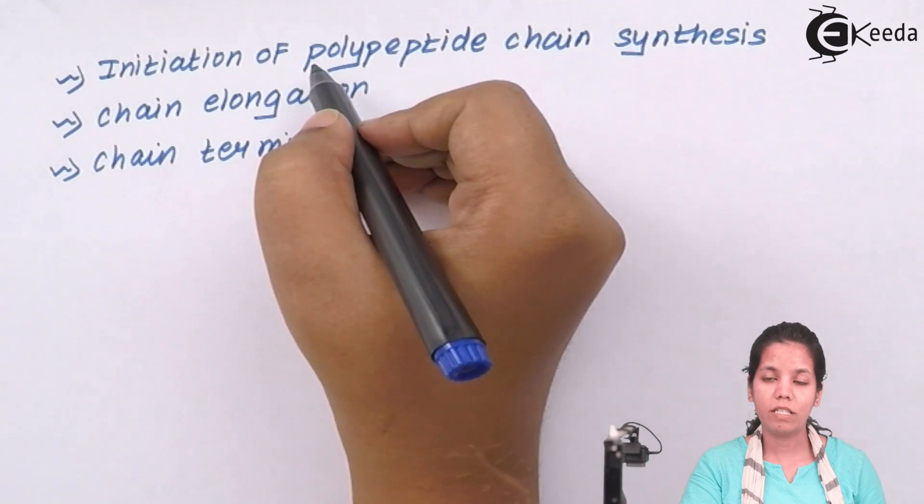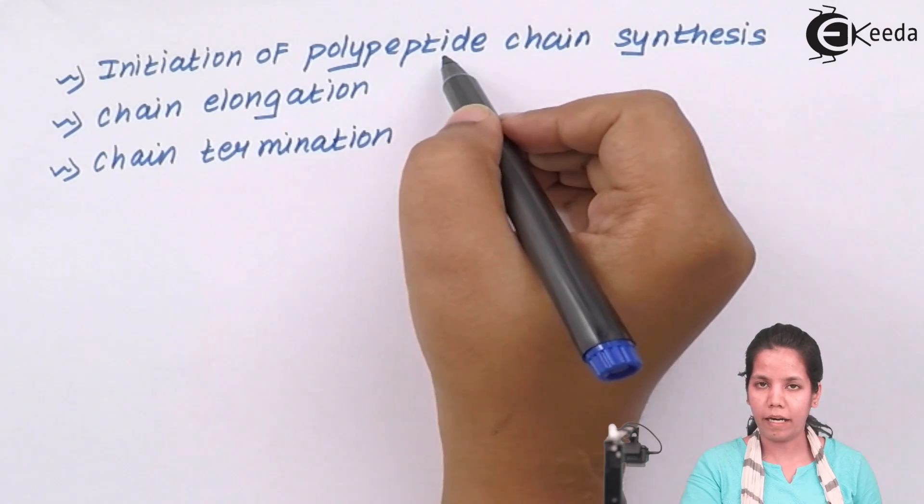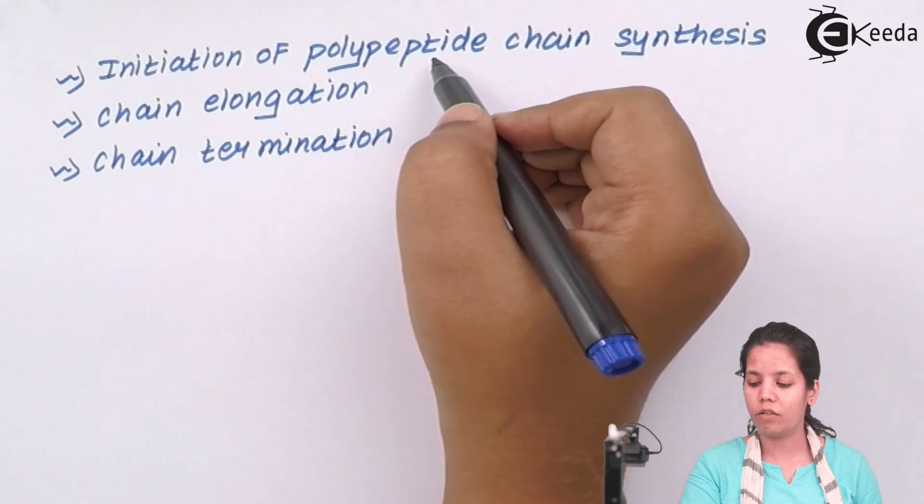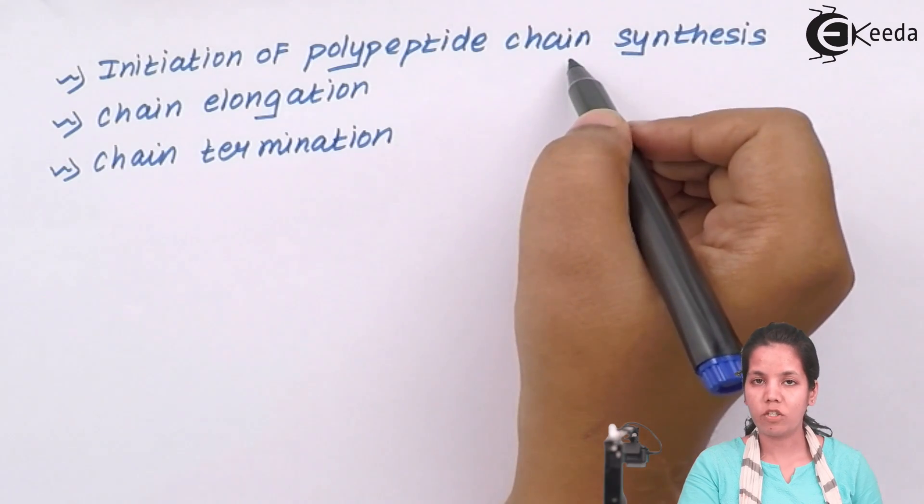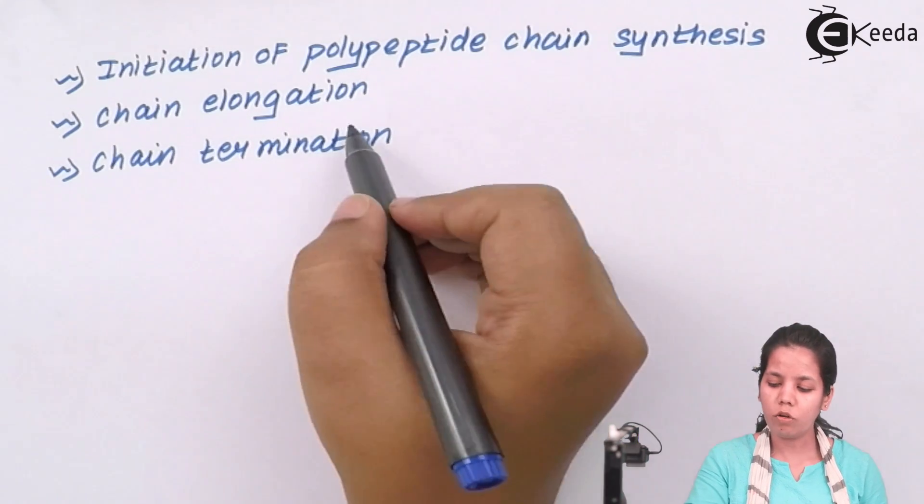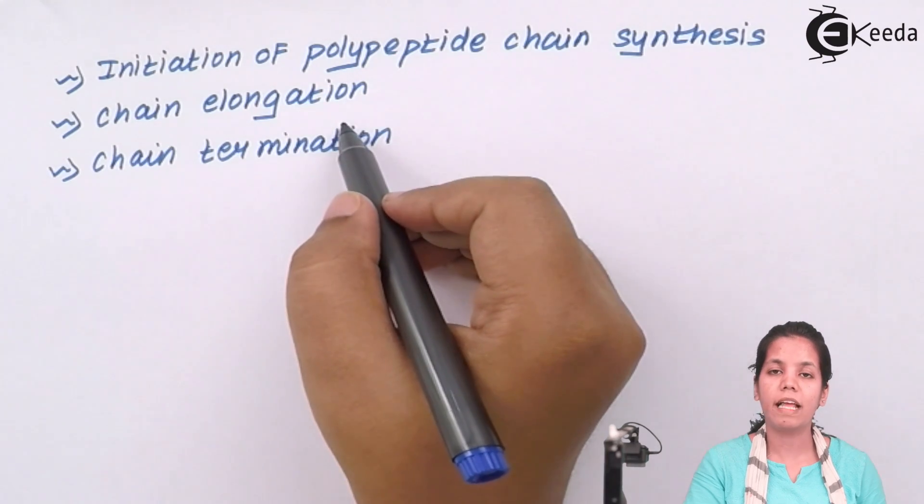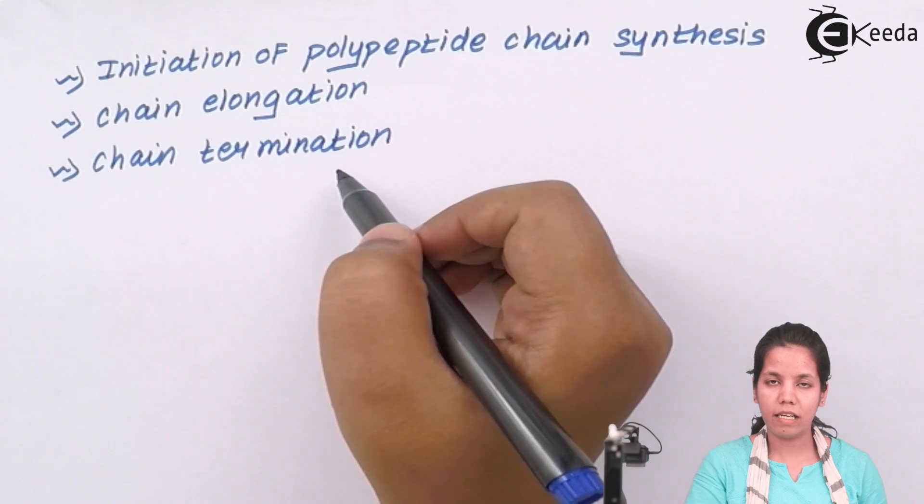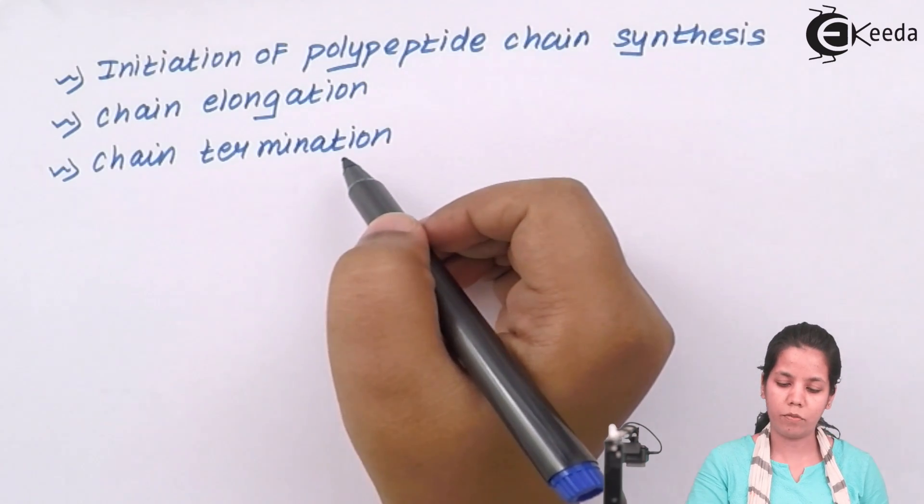The next process is initiation of the polypeptide chain and well, I have told you all that the polypeptide chain is nothing but which is formed after amino acids have linked together. Now, once polypeptide chain has been synthesized, a long chain is formed of polypeptides and this long chain is nothing but your proteins and once this is done, the chain basically terminates or stops.